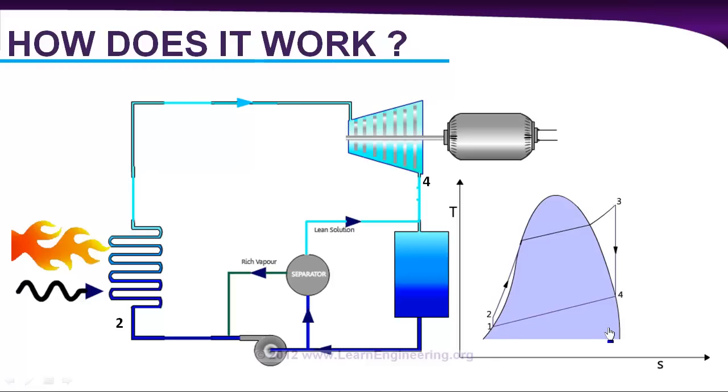But this was not the case of the Rankine cycle. In Rankine cycle these temperature levels were the other way. Temperature at point 4 was lower than temperature at point 2.